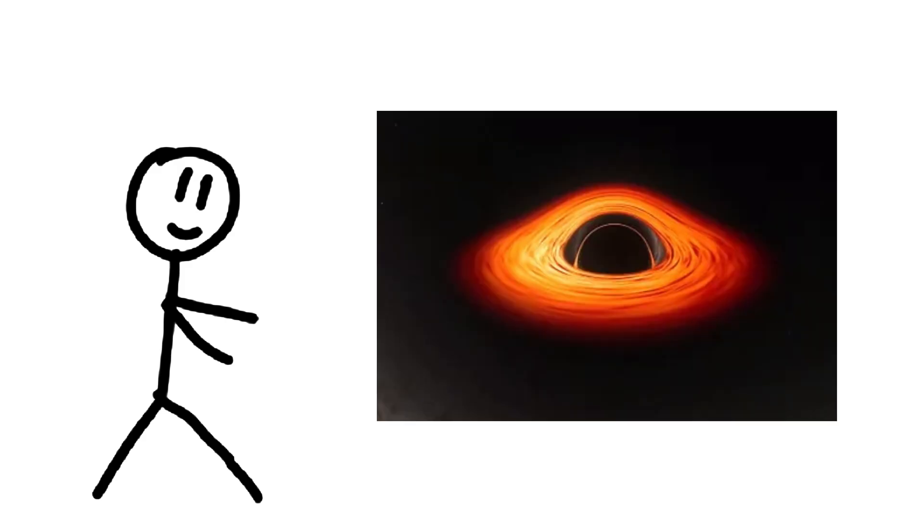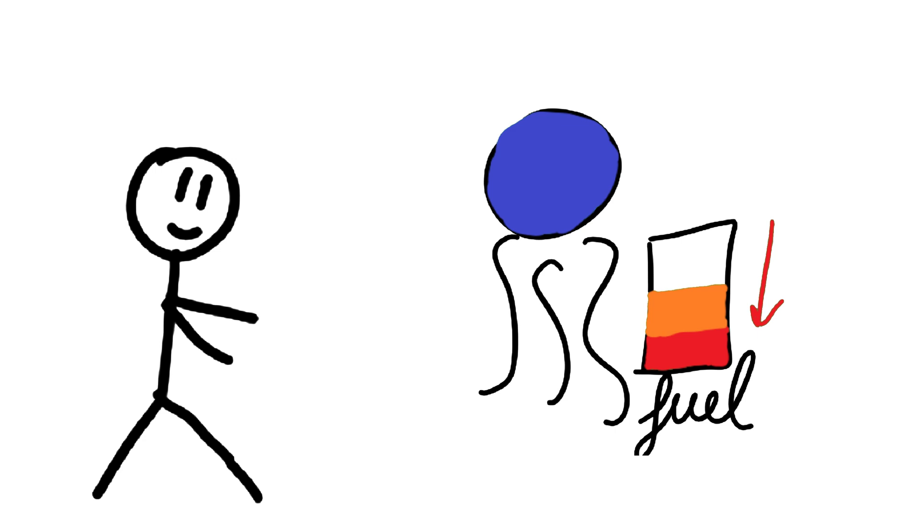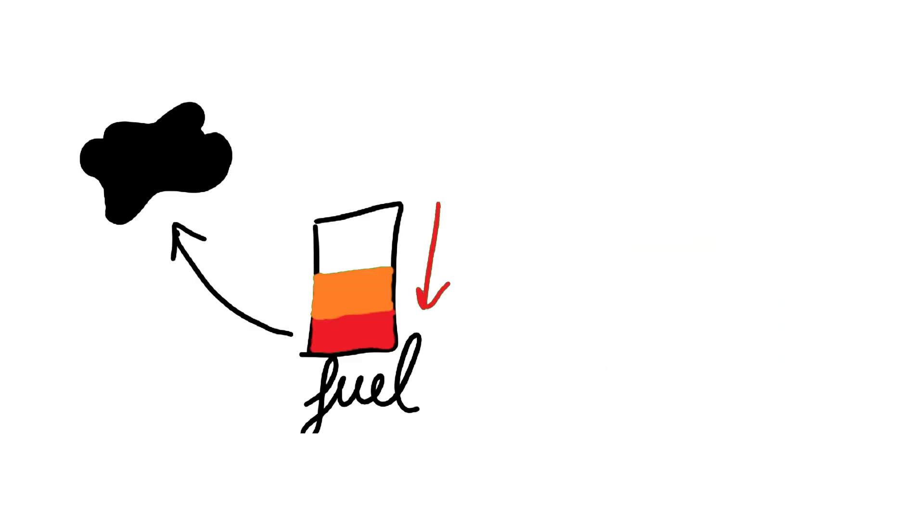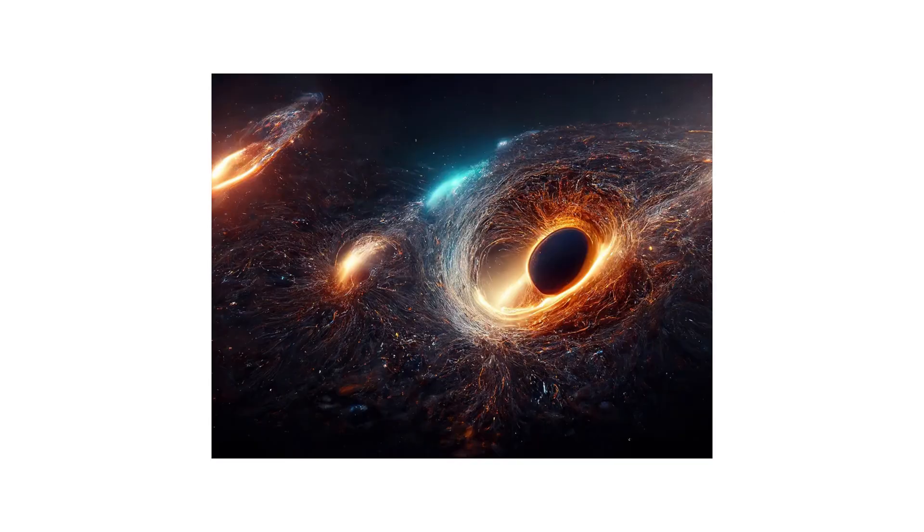Black holes are mysterious and fascinating objects in space. They form when massive stars collapse under their own gravity after running out of fuel. This collapse creates a region where gravity is so strong that nothing, not even light, can escape. This region is called the event horizon and it marks the boundary of a black hole.